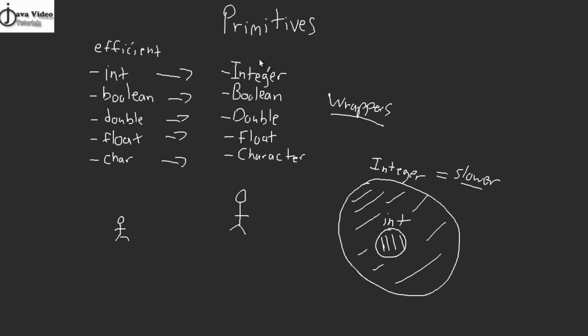So the primitive types you could think of as the efficient little brother, whereas the object counterparts have more functionality. Hopefully that gives you a little bit of insight around what a primitive is and what an object is. Now let me go a little bit further to explain some special characteristics of the primitive.